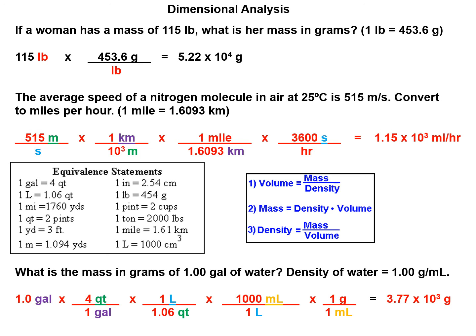Gallons cancel out, quarts cancel out, liters cancel out, milliliters cancel out. And what we're left with is grams per liter. Or grams, not per liter. I'm sorry. What is the mass in grams of one gallon of water? So that's how many grams are in one gallon of water.